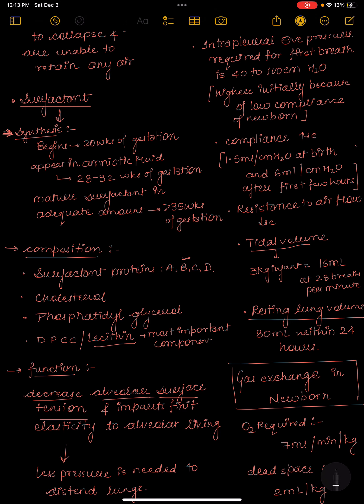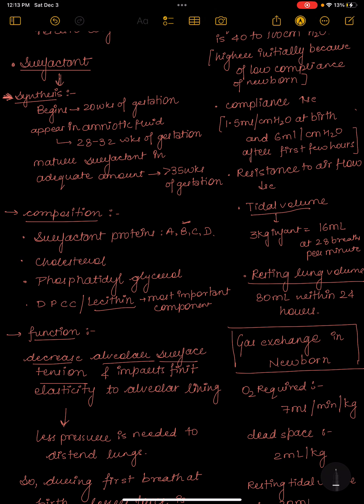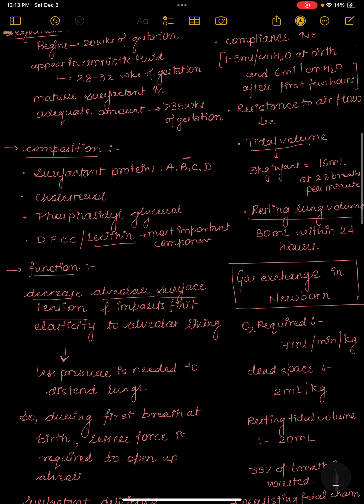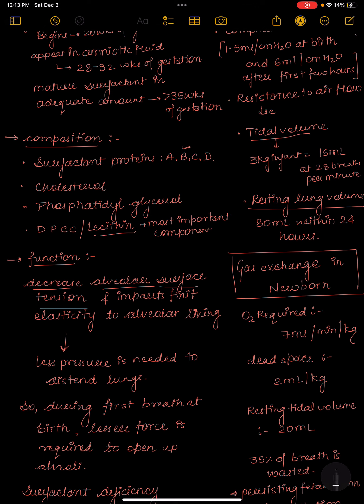Mature surfactant in adequate amount is found at more than 35 weeks of gestation. The composition of surfactant includes surfactant proteins A, B, C, and D, where B is important, plus cholesterol, phosphatidyl glycerol, and lecithin, which is the most important component.